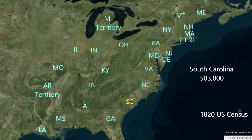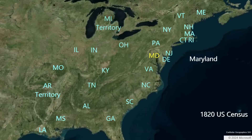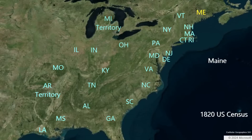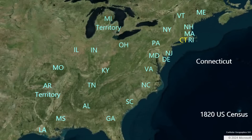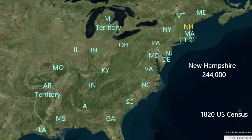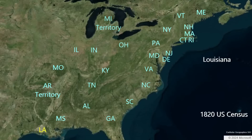South Carolina counted 503,000 people in 1820. Tennessee counted 423,000 residents. Maryland recorded 407,000 people. Georgia's population was at 341,000. The newly realized Free State of Maine, delineated from Massachusetts in 1820 to check the entry of the new slave state Missouri, had 298,000 people. New Jersey counted 278,000 residents. Connecticut's population stood at 275,000. New Hampshire counted 244,000 people. Vermont tabulated 236,000 residents. Louisiana, the first state west of the Mississippi River, had 153,000 people.